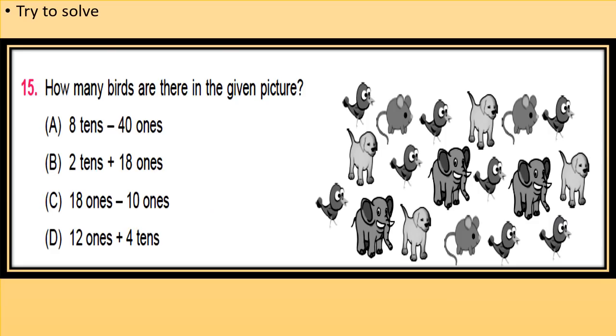How many birds are there in the given picture? Look at the picture. You have to calculate the number of birds given in the picture. Options A, B, C, and D are given in form of tens and ones. So you first calculate the number and then choose the correct option.